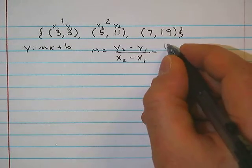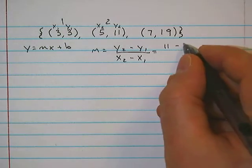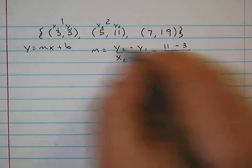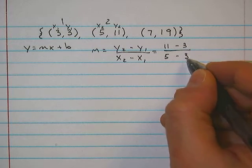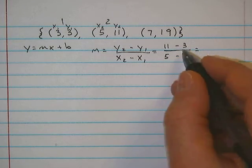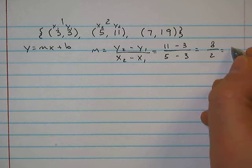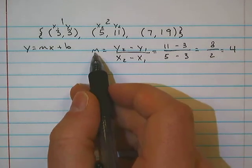So y2 is 11 minus y1, which was 3, all over x2, which is 5, minus x1, which is 3 as well. Now I do the math. 11 minus 3 is equal to 8, and 5 minus 3 is equal to 2, and I reduce down to 4.